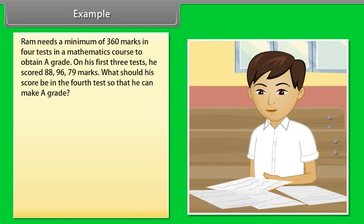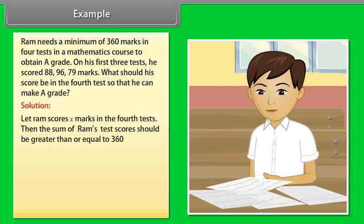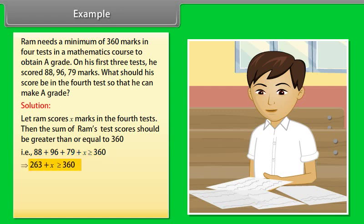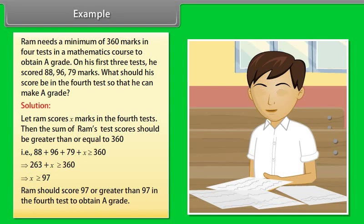Example: Ram needs a minimum of 360 marks in 4 tests in a mathematics course to obtain an A grade. On his first 3 tests, he scored 88, 96, and 79 marks. What should his score be in the 4th test? Let Ram score x marks in the 4th test. The sum should be ≥ 360: 88 + 96 + 79 + x ≥ 360, so 263 + x ≥ 360, giving x ≥ 97. Ram should score 97 or greater in the 4th test to obtain an A grade.